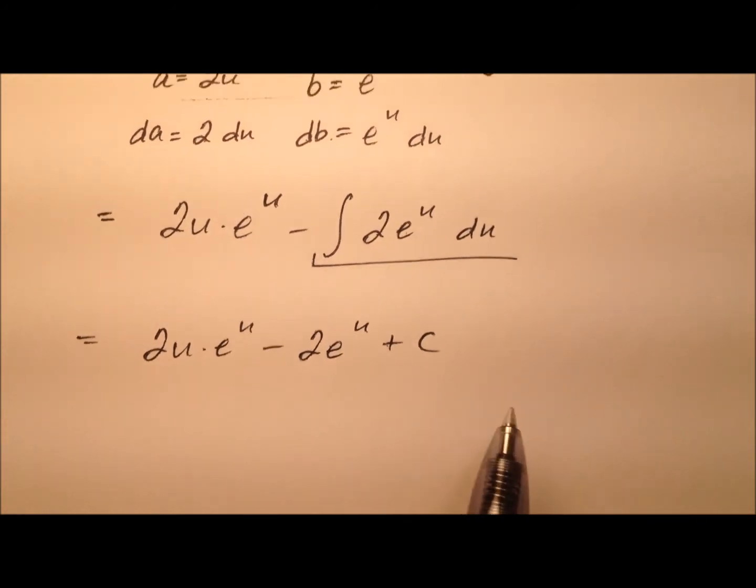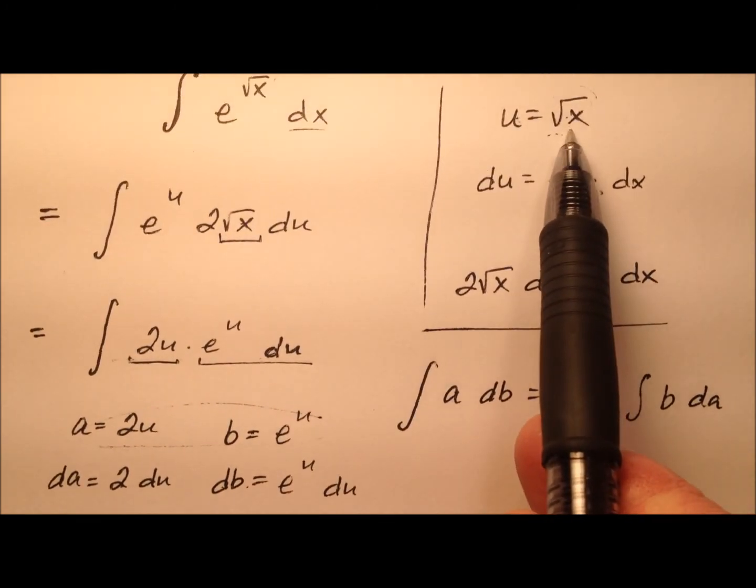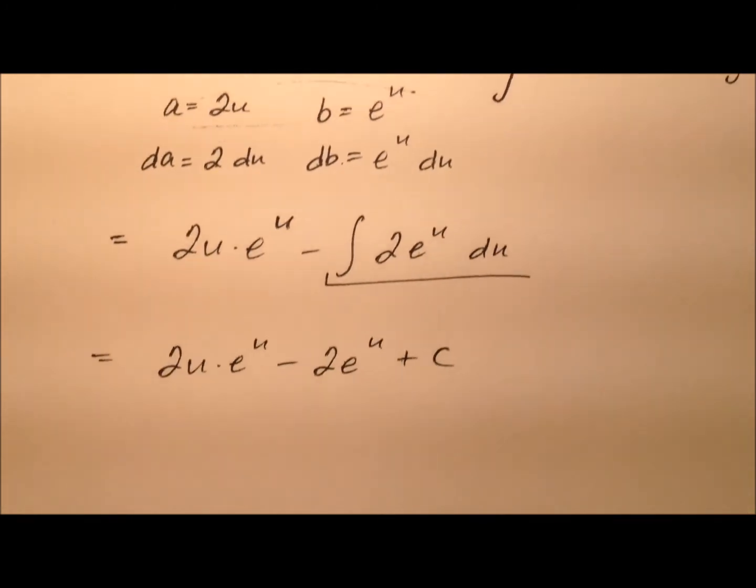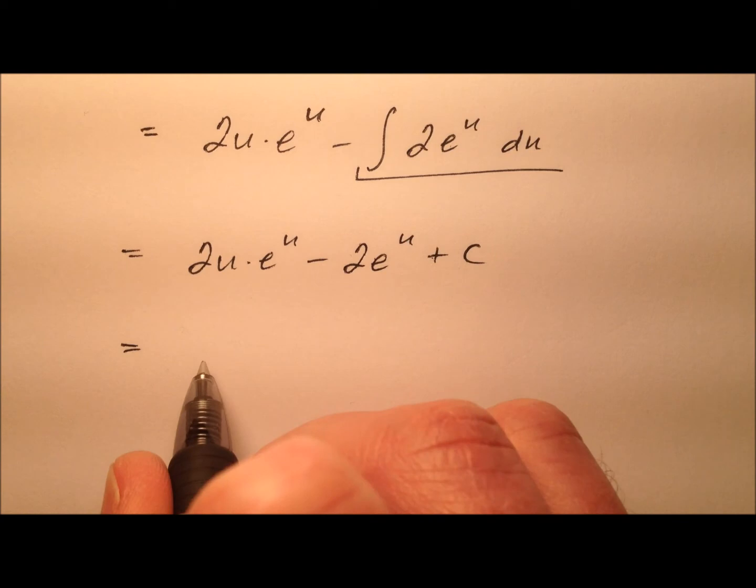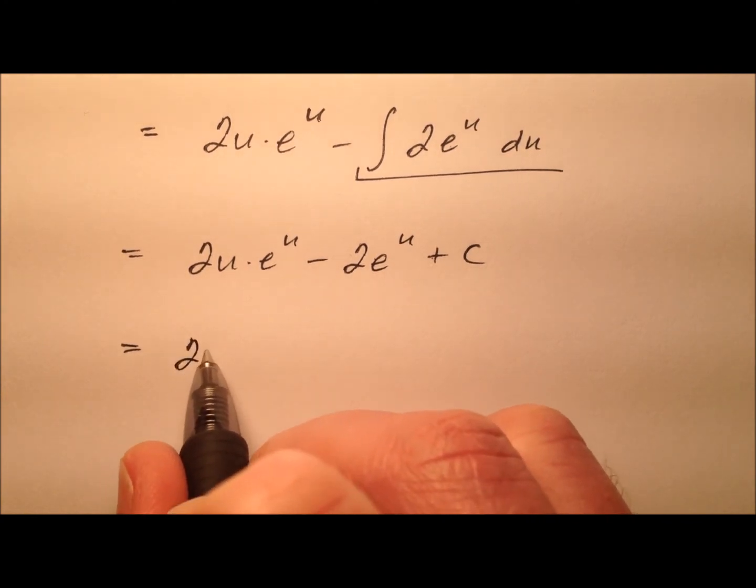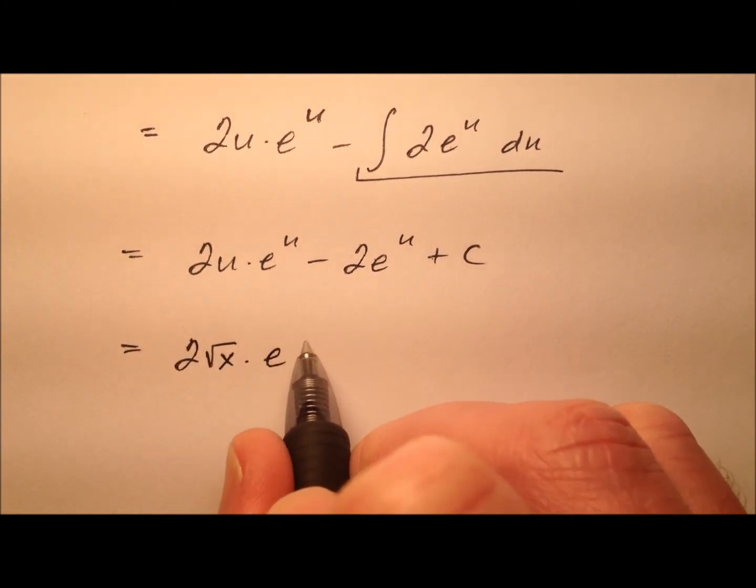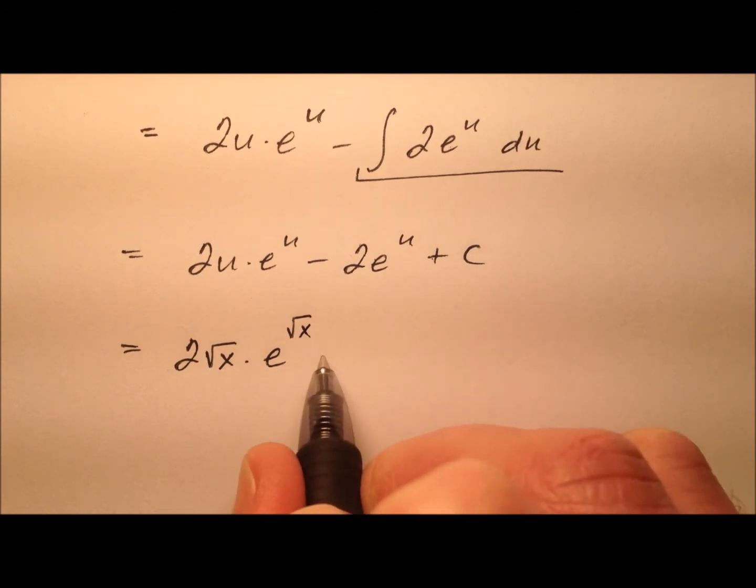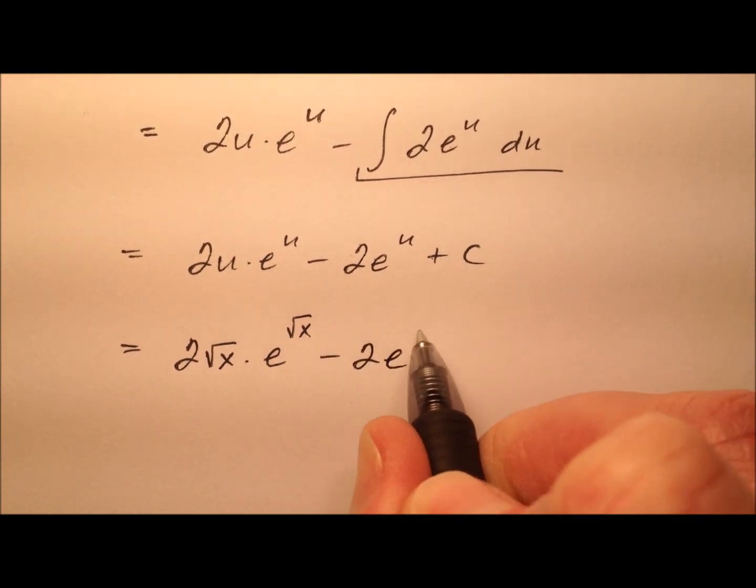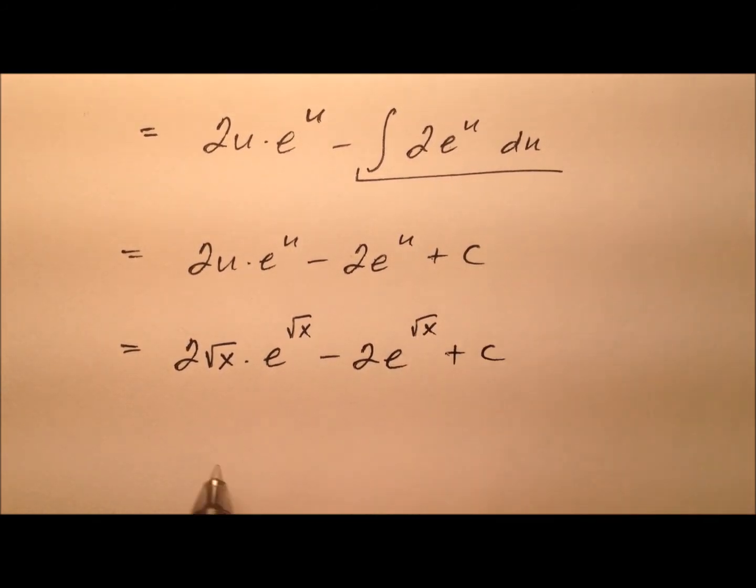So it looks like we're done, except going ahead and putting the square root of x back in for u. So let's go ahead and do that. So we have 2 times the square root of x times e to the square root of x minus 2e to the square root of x plus c.